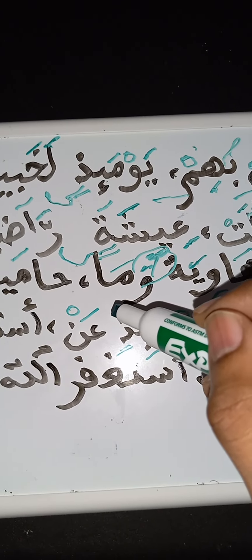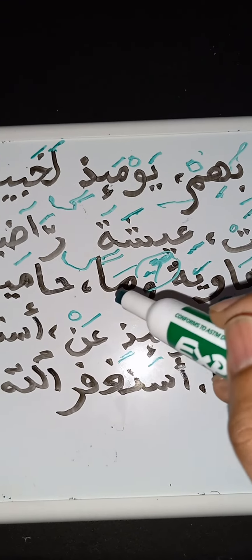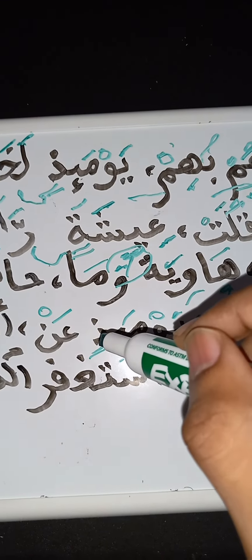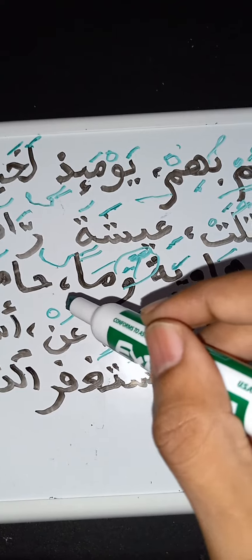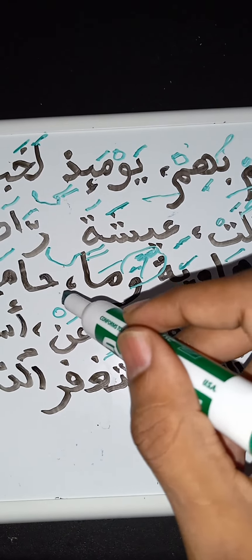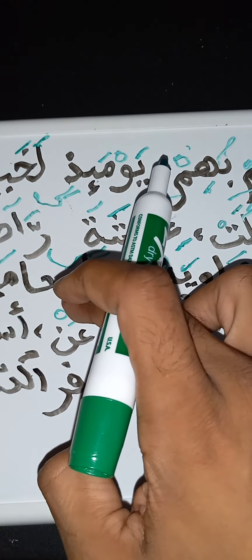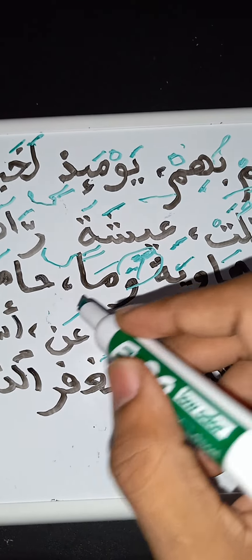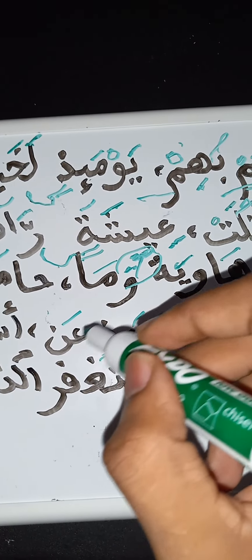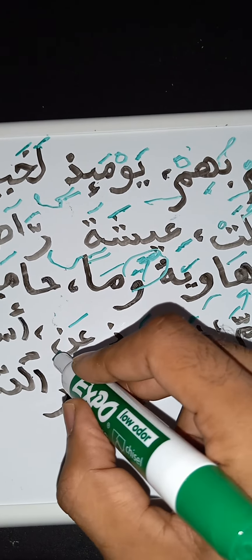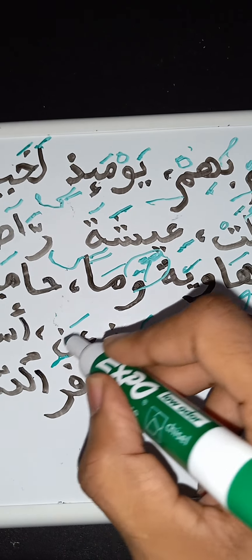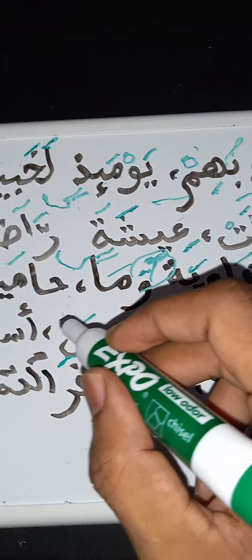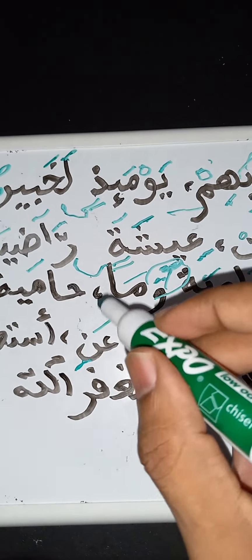It would be 'in thumma la tus'alun yawma idhin.' But the word — when we have to connect it on to the next word, it is 'ani,' and then we have the shamsiya, or 'an-na'im.' Now, how do we spell the word?